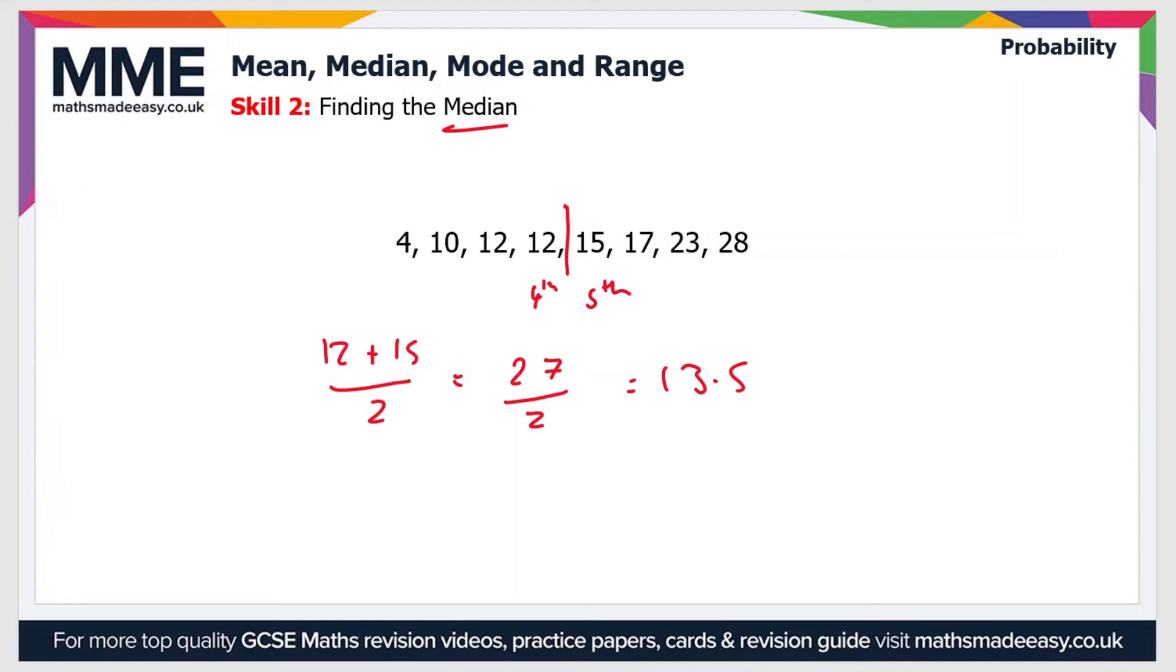But if we have an odd number of numbers in our set, so let's say we had the exact same set but with the value 29 on the end, then in this case there's now 9 values. Let's just rub out this from before. So there's 9 values now in our set.